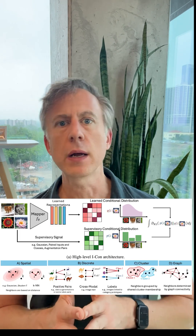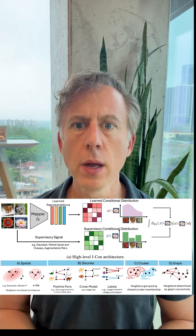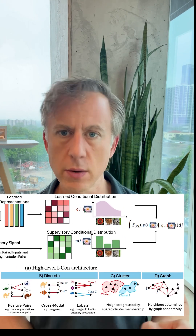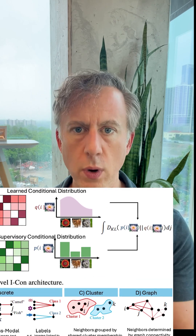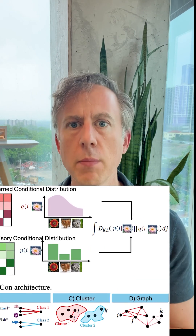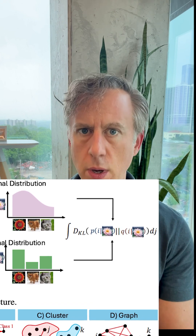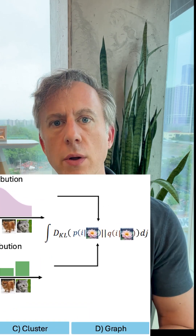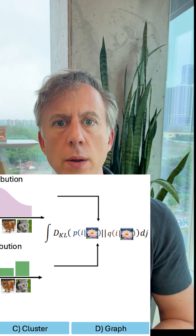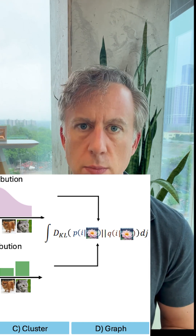The secret lies in a simple yet elegant mathematical idea. The ICON framework reveals that all these algorithms are fundamentally trying to achieve one goal: make the learned representation, Q, represent the target representation — what they call the supervisory signal, P — all using the KL divergence measurement.